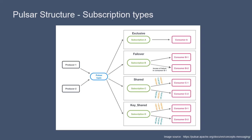There are four different subscription types. With the Exclusive subscription, only one consumer can read from a topic at a time. In the event that the active consumer fails, the backup is allowed to take over. For both Exclusive and Failover, only one consumer can be reading from the topic at a time, so it's not very scalable. However, message ordering is preserved.